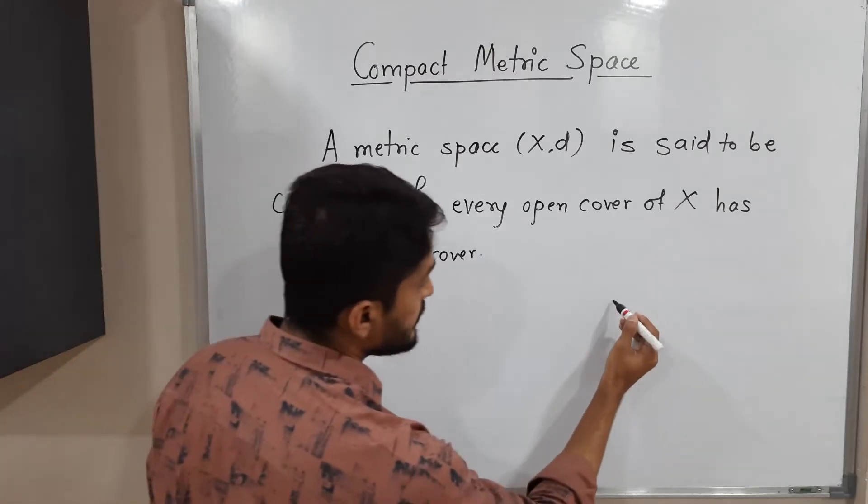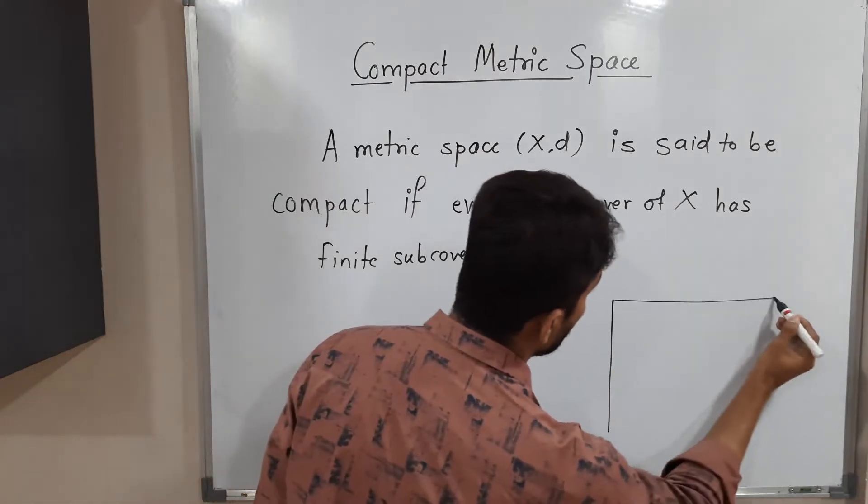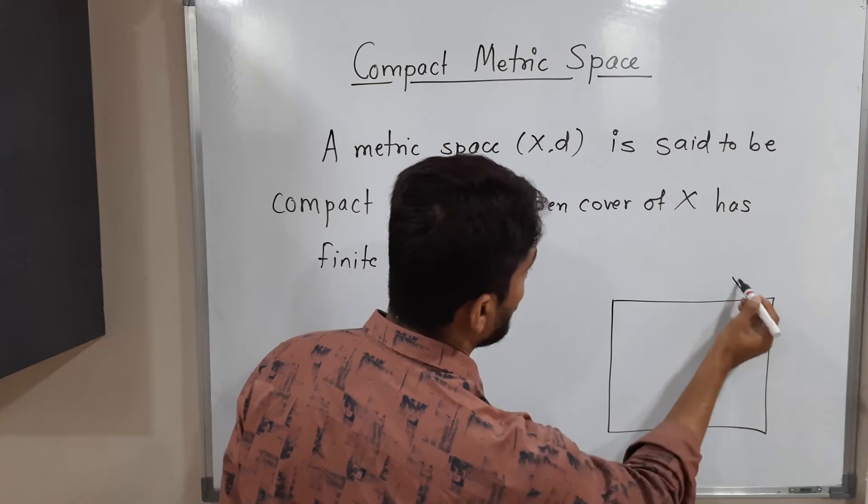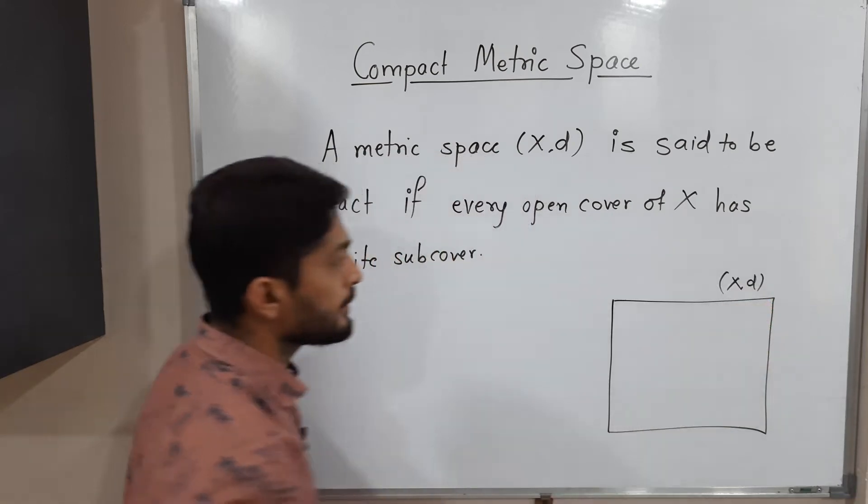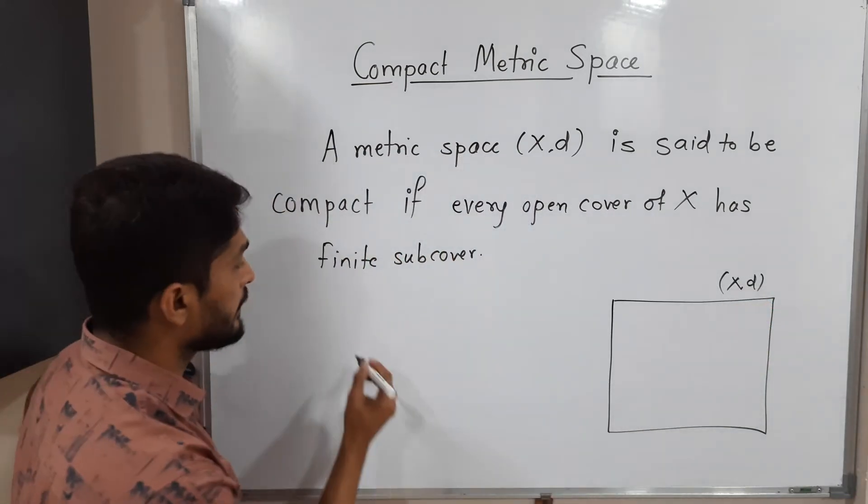Okay, so what is the meaning of that? Suppose we have this metric space (X,d), and suppose you have a cover of X, that means script C.